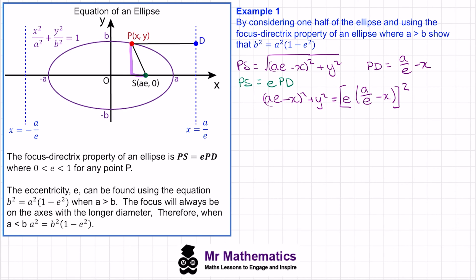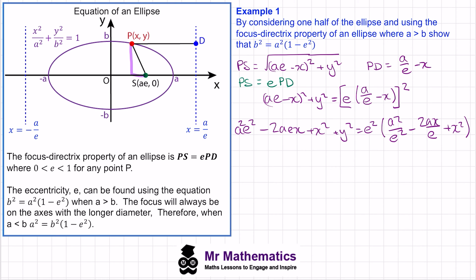Now we expand the left-hand side and get a squared e squared minus 2aex plus x squared plus y squared. This equals e squared multiplied out: a squared over e squared minus 2ax over e plus x squared.